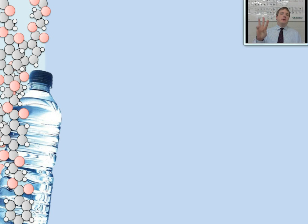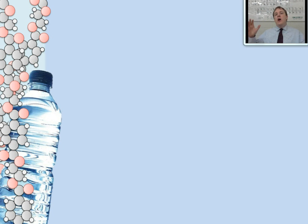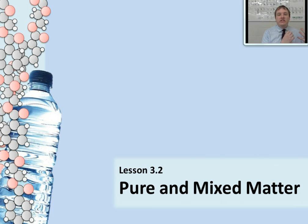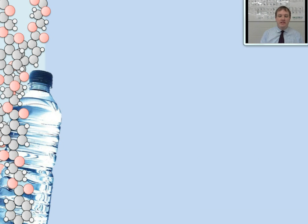In the previous lesson, you learned about the three building blocks of matter — the three basic units that make up all of the substances around us. In this lesson, we're going to start by reviewing those three basic building blocks because they are so important for understanding matter. But that's not the main focus of this lesson. This lesson is all about understanding two broad categories into which we place all matter we observe in the created universe: pure substances and mixed matter. So let's start by reviewing those three basic building blocks.